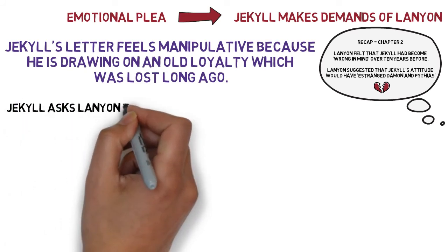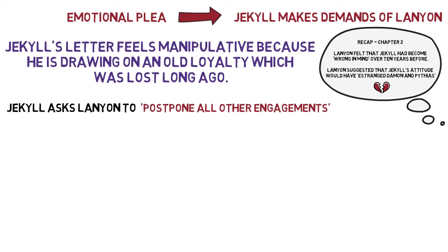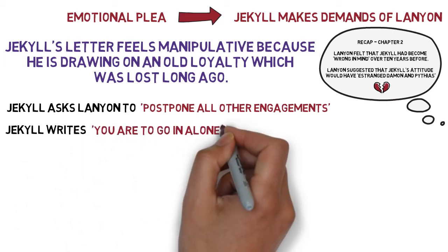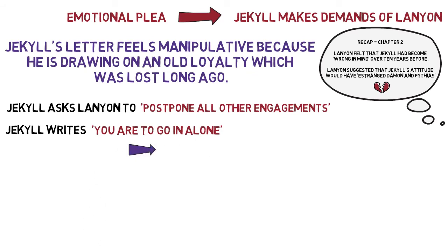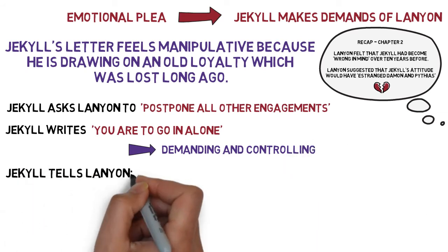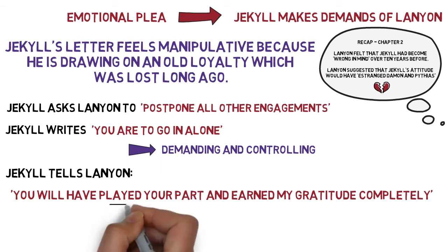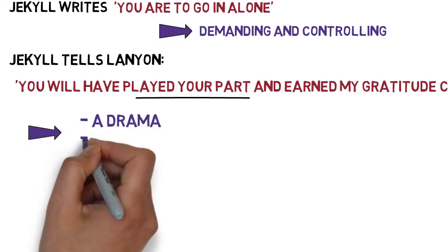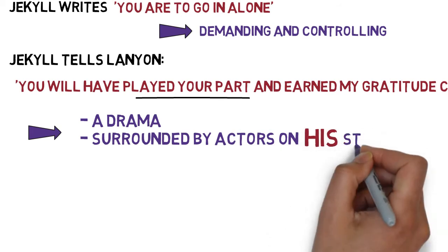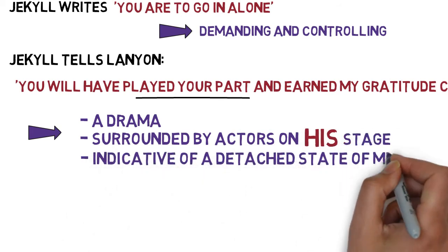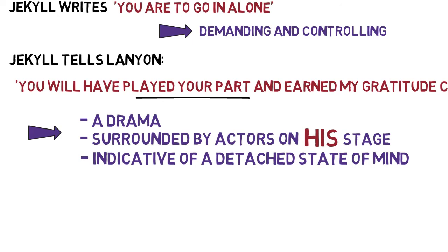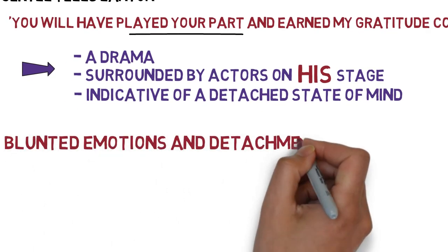Jekyll asks Lanyon to postpone all other engagements to help him, and gives a series of very direct instructions — 'You are to go in alone' — with a tone that feels demanding and controlling. If Lanyon completes the instructions, Jekyll tells him: 'You will have played your part and earned my gratitude completely.' There's something about the phrase 'played your part' which is worthy of consideration. We get the sense that Jekyll sees his life, or at least his current state, as a drama, surrounded by actors playing their parts on his stage. This strikes me as indicative of a detached state of mind — not only is he utilising others to achieve his own ends, but the reference to their playing a part feels as though he's watching this unfold before him with blunted emotions and detachment from reality.